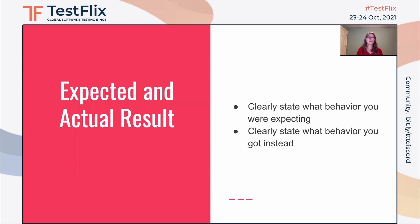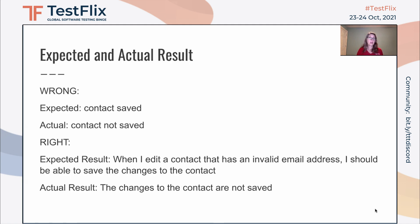Next, expected and actual results. This is really helpful, especially when you are working with very complicated features that have very complicated rules. Six months from now you might not remember what the rules were for this particular area of the application. So you want to clearly state what behavior you were expecting, and then clearly state what behavior you got instead. The top example is okay: 'Expected: contact saved. Actual: contact not saved.' But the lower example is much clearer. 'Expected results: when I edit a contact that has an invalid email address, I should be able to save the changes to the contact. Actual results: the changes to the contact are not saved.'